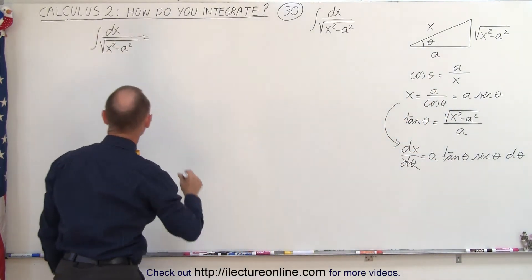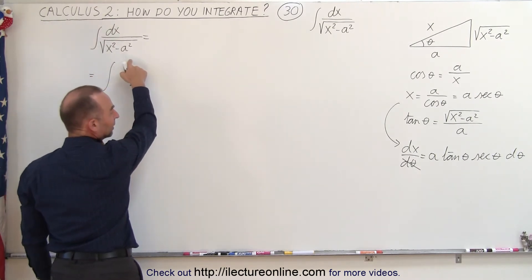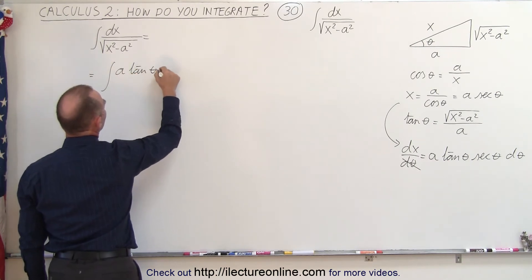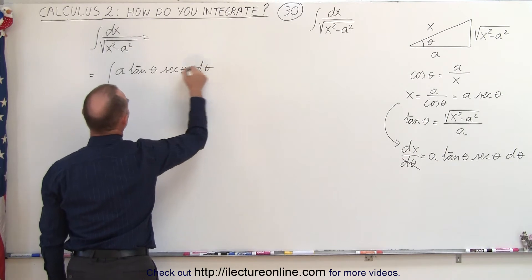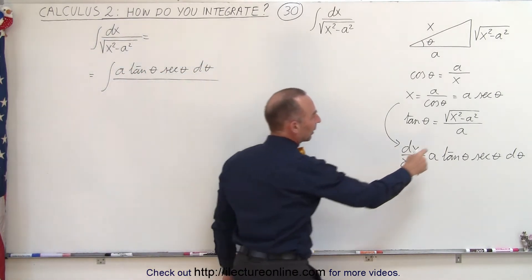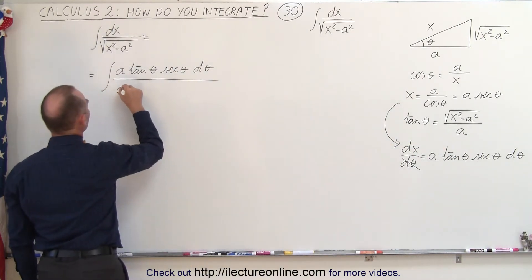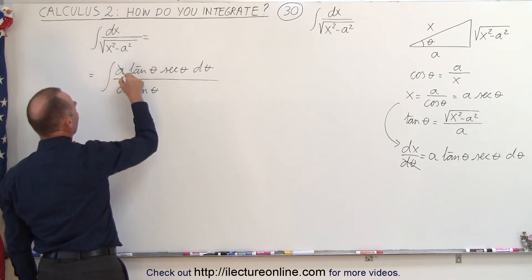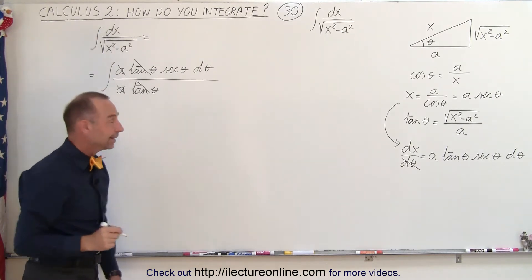So let's go ahead and make that substitution. This would be equal to the integral where in the numerator we have a dx, which is a times the tangent of theta times the secant of theta times dθ. And in the denominator, the square root of x squared minus a squared can be written as a times the tangent of theta. Notice that the a's cancel out, the tangent of theta cancels out, and we're left with the secant of theta dθ.